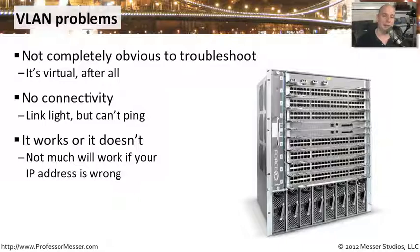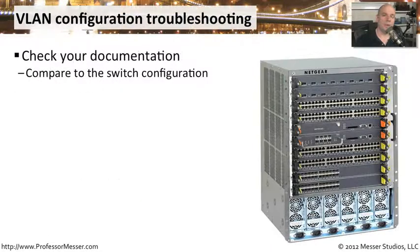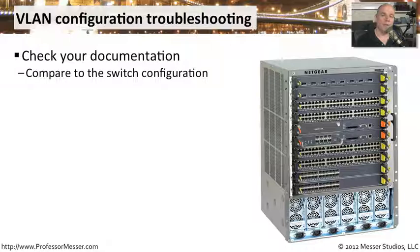These VLANs separate out everything by their IP address. If we've statically assigned an IP address on a server and we're trying to communicate out, if we're on the wrong subnet, we're not going to get any connectivity to any other device on the network. Hopefully, as you are building out your switch and your network, you spent some time creating documentation of how your network is designed — at least a logical diagram of where your different VLANs are, what devices are connected to those VLANs, and what IP address schemes are associated with each separate VLAN.